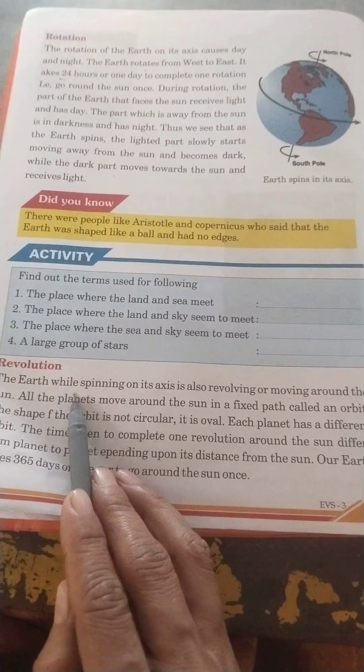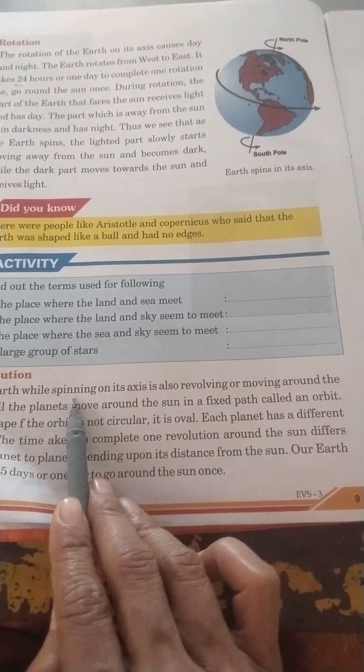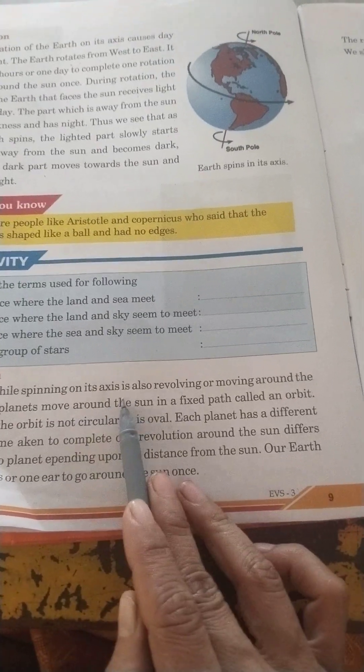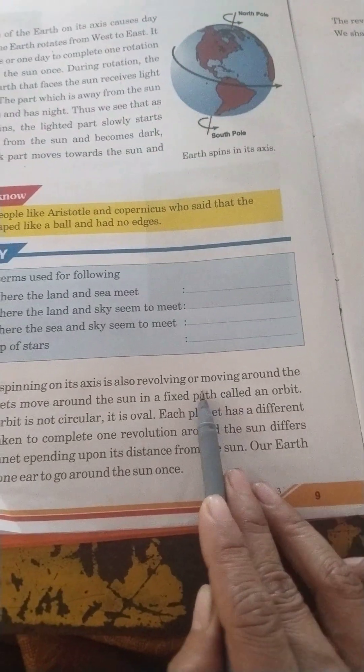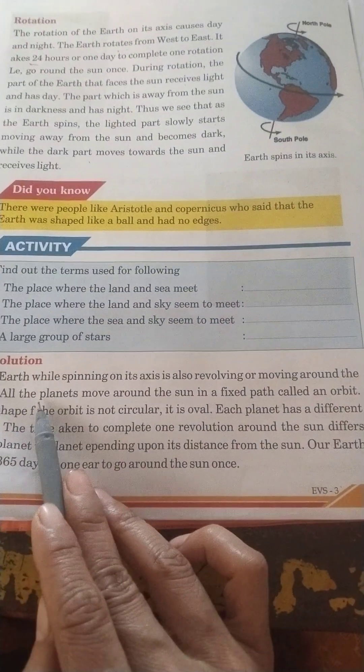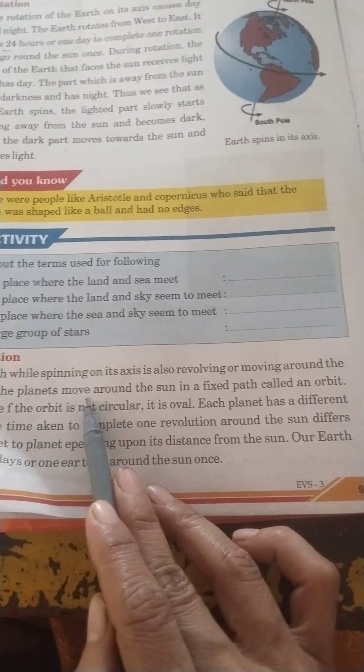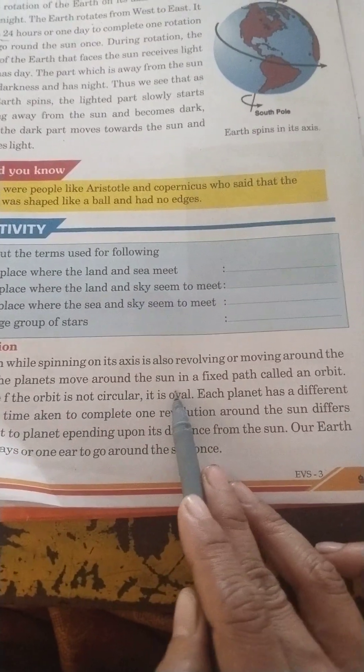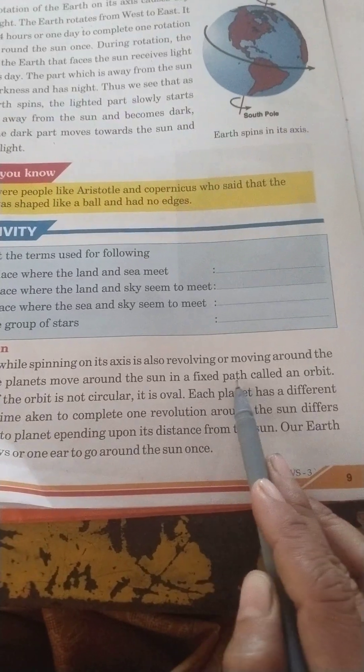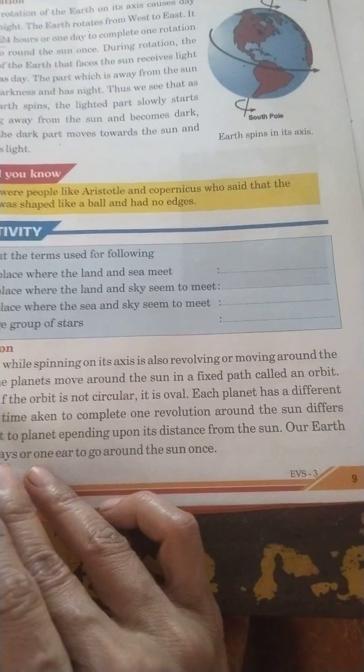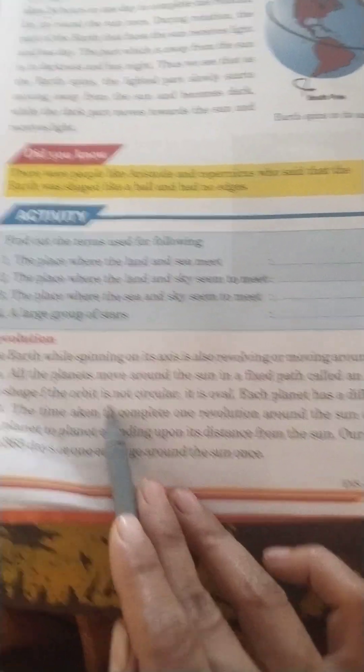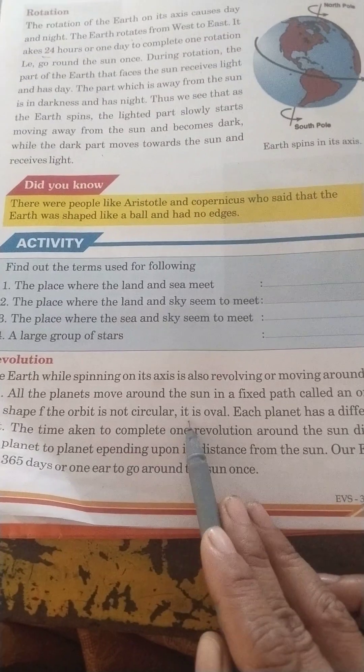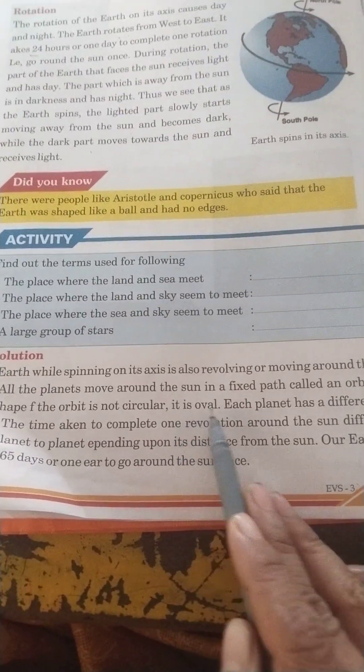Revolution. The earth while spinning on its axis is also revolving or moving around the sun. All the planets move around the sun in a fixed path called an orbit. The shape of the orbit is not circular, it is oval.